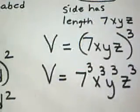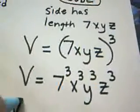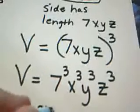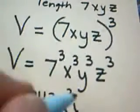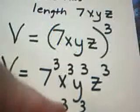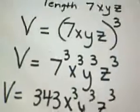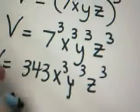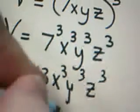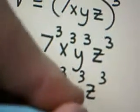Okay, even without a calculator, isn't that good? So we have volume is 343, x cubed, y cubed, z cubed. And my final answer is going to be in cubic units. And we're done.